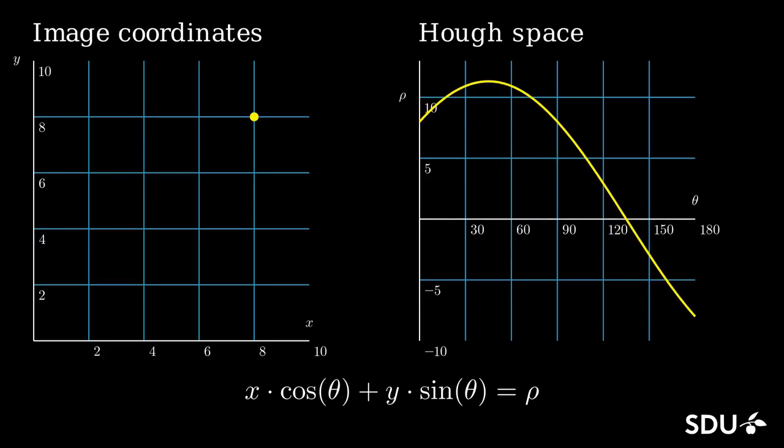We can also do it the opposite way around, where we have a single point in Hough space that is connected to a straight line in image coordinates. And by moving that point around, we also modify the represented line in the image coordinates.